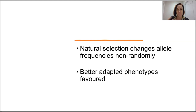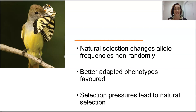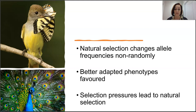Phenotypes that are better adapted to an environment are favoured, and these can be instigated through a variety of selection pressures — things like competition between species for food, territory, competition within the species for food, water or territory, predator-prey relationships, and sexual selection to successfully attract a mate. They're all types of selection pressures that organisms may face.